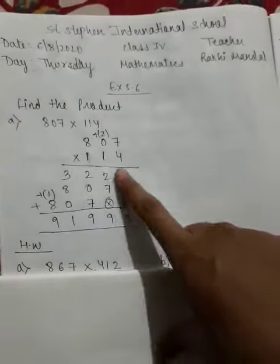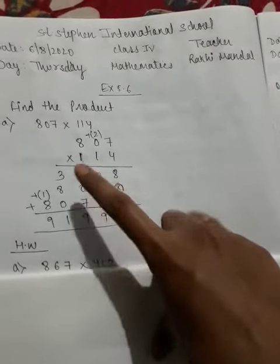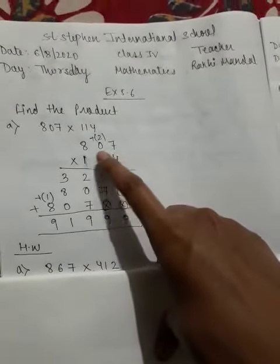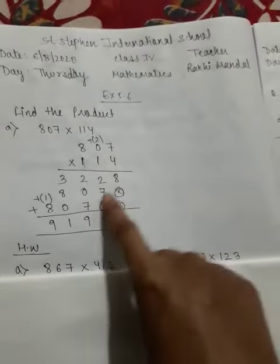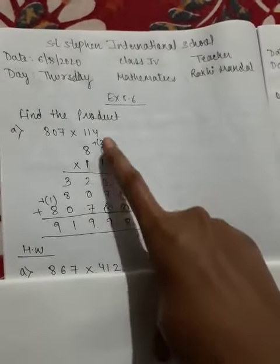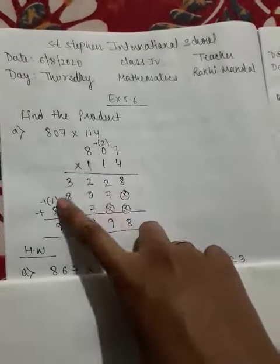Okay so humko kya karna, multiply karna. You know how to multiply. First you have to multiply by 4, each number. So 4 7's are 28, 2 is carry, kuch nahi hai toh 2, and 4 8's are 32.